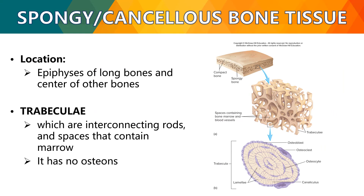Spongy or cancellous bone tissue is located in the epiphysis of long bones and the center of other bones. A key characteristic is the presence of trabeculae, which are interconnecting rods and spaces that contain marrow. Unlike compact bone, spongy bone does not have osteons.